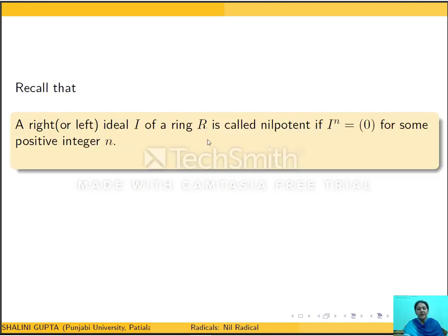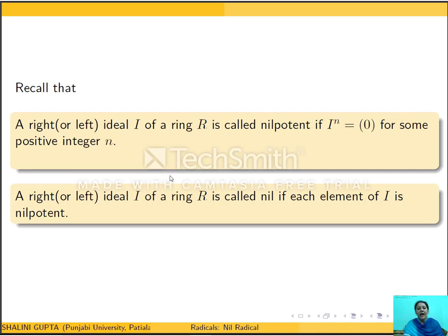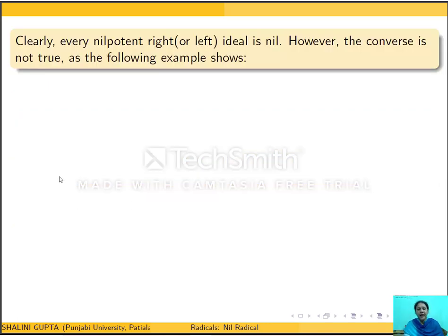Let us recall the definition of nilpotent ideal. A right ideal I of ring R is called nilpotent if some power I^n is 0 for some positive integer n. An ideal is called a nil ideal if every element of I is nilpotent. We can see easily that every nilpotent ideal is nil, but the converse need not be true.